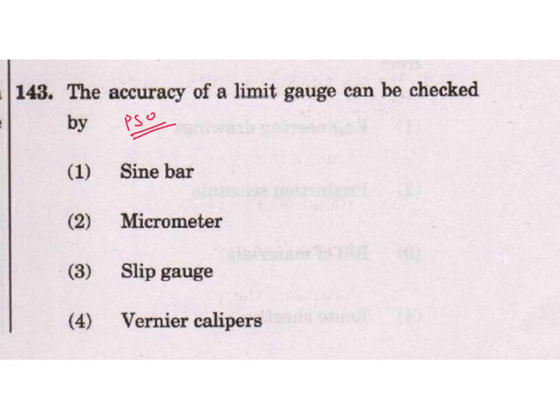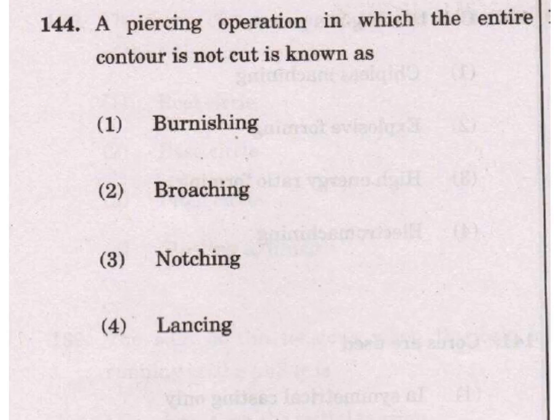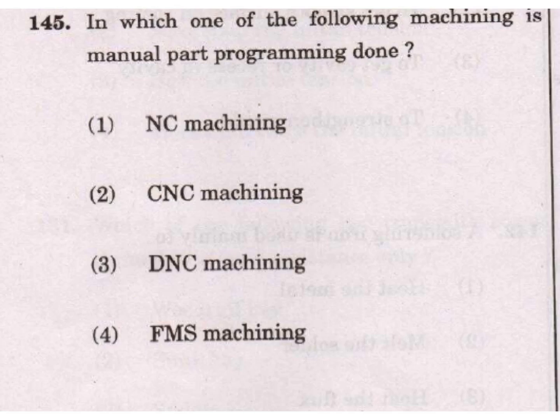A piercing operation in which the entire contour is not cut is known as a lancing operation. In which of the following machining is manual part programming done? The answer is NC machining. This was also asked in the Vizag Steel MT examination.